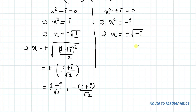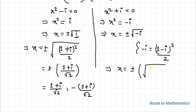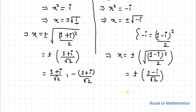Similarly, we can substitute minus i as 1 minus i whole square divided by 2. By substituting, we have x equals plus or minus root under 1 minus i whole square divided by root 2. So from here we get x equals negative 1 minus i divided by root 2, and the other solution is 1 minus i divided by root 2.